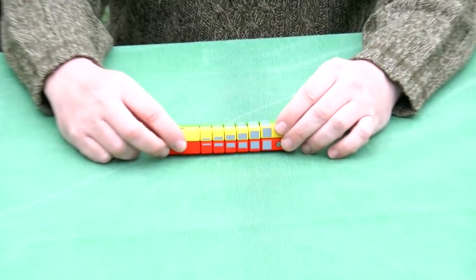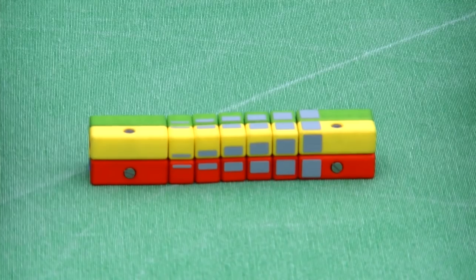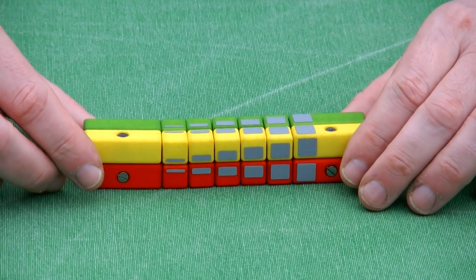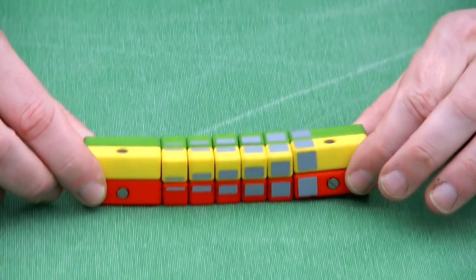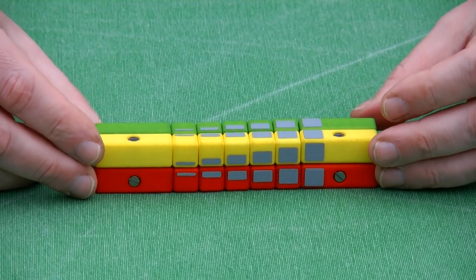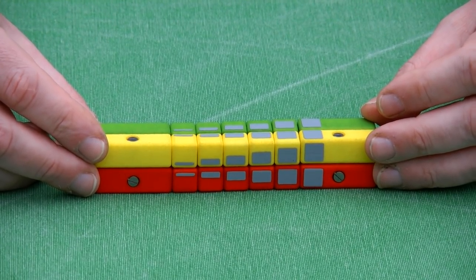But unfortunately it used magnets, and even though it works well, because of the magnets you can take it apart. So Longshot is a first attempt towards breaking that record, but with a twisty puzzle that cannot be taken apart.